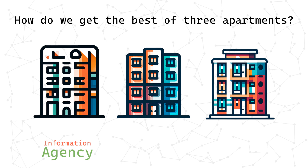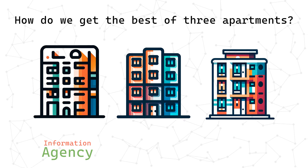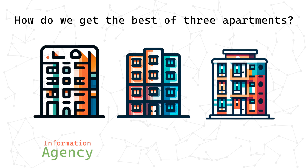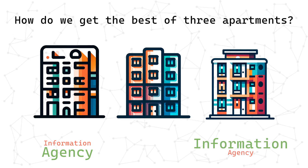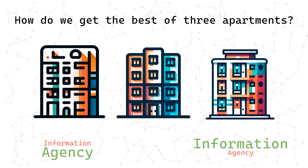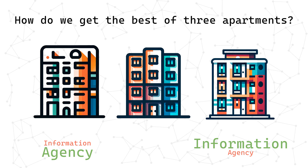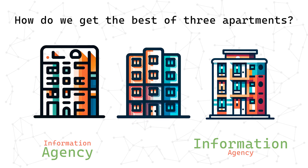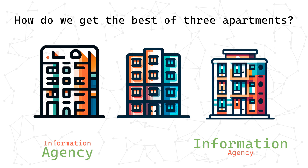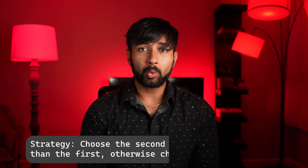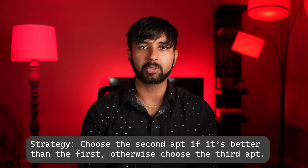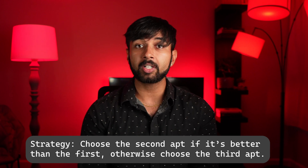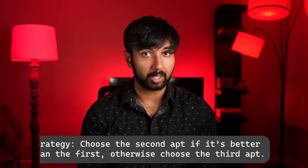Either we select it on the spot or move on. When looking at the last apartment, we don't have any agency — we have to choose that one because we can't go back to previous options. But when looking at the second apartment, we have a little bit of both information and agency. So what if we choose the second apartment if it's better than the first one, but reject it in favor of the third one if it's not?